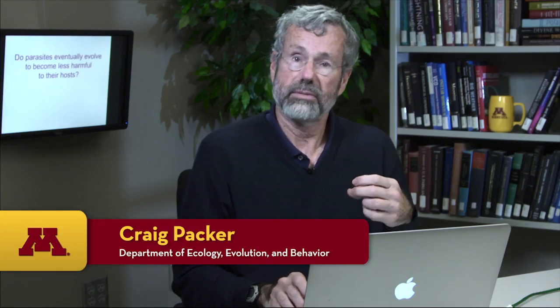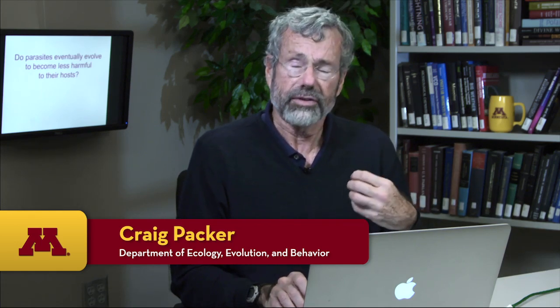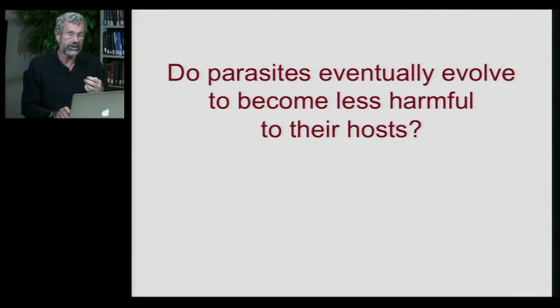In thinking about the co-evolution between parasites and their hosts, we often hear that diseases when they first attack a new host species are likely to be really nasty, but after a while they might co-evolve to be less dangerous to their host. This has led evolutionary biologists who specialize in co-evolution to ask whether that's true — do parasites eventually evolve to become less harmful to their hosts, and if so, is that inevitable?